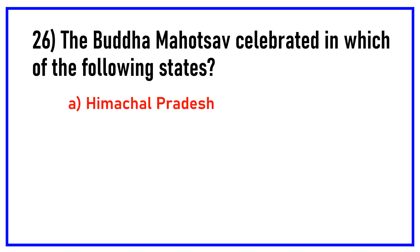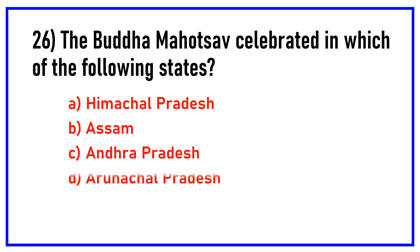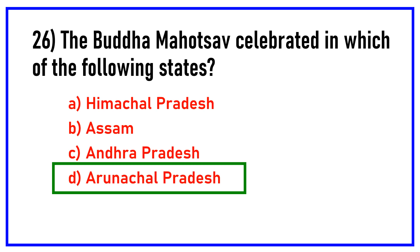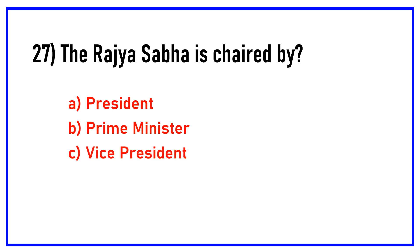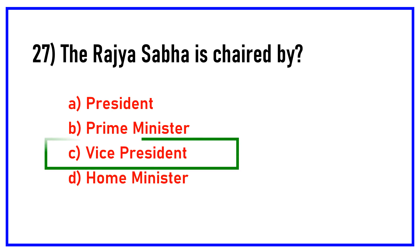The Buddha Mahotsav is celebrated in which of the following states? Options are: Himachal Pradesh, Assam, Andhra Pradesh, Arunachal Pradesh. The Rajya Sabha is chaired by. Options are: President, Prime Minister, Vice President, Home Minister. Answer: Vice President.